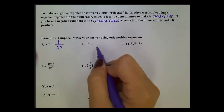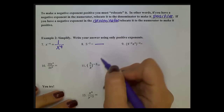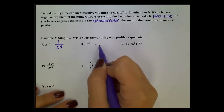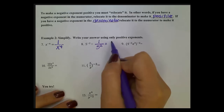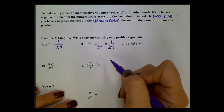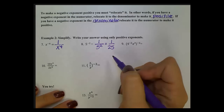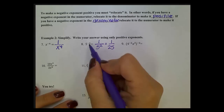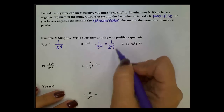In number 8, I see a negative exponent, so I'm going to make a fraction bar. To make the negative exponent positive, I relocate it to the denominator. My numerator is a 1. If I then evaluate, I get 1 over 25. If you put this into your calculator using negative 2 power and then math, enter, enter to turn it to a fraction, you would also get 1 twenty-fifth.